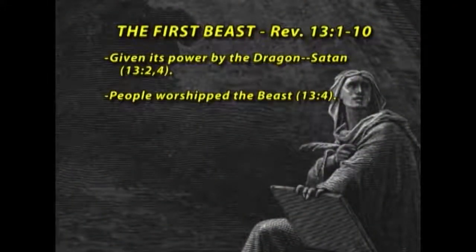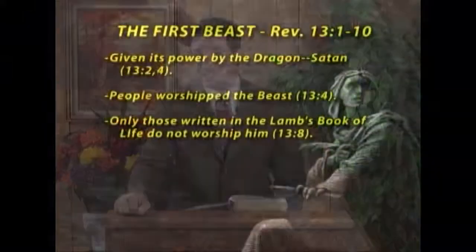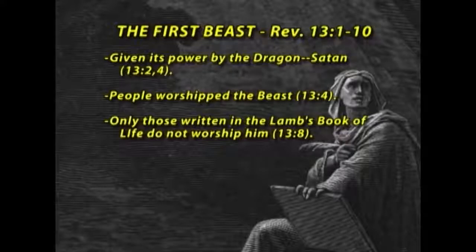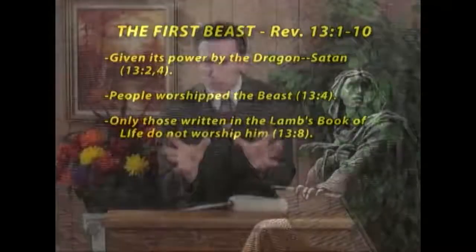Revelation 13, verse 4 tells us another characteristic: people worshipped this beast. Whatever this beast was during the time of the first century, people worshipped him. History tells us that Rome and especially the Caesars and rulers of Rome were looked at as gods. The annals of history clearly show that people worshipped the emperors and the Roman government during that time as gods. Revelation 13, verse 8 tells us that only those written in the Lamb's Book of Life did not worship the beast. Christians are the ones not worshipping him.